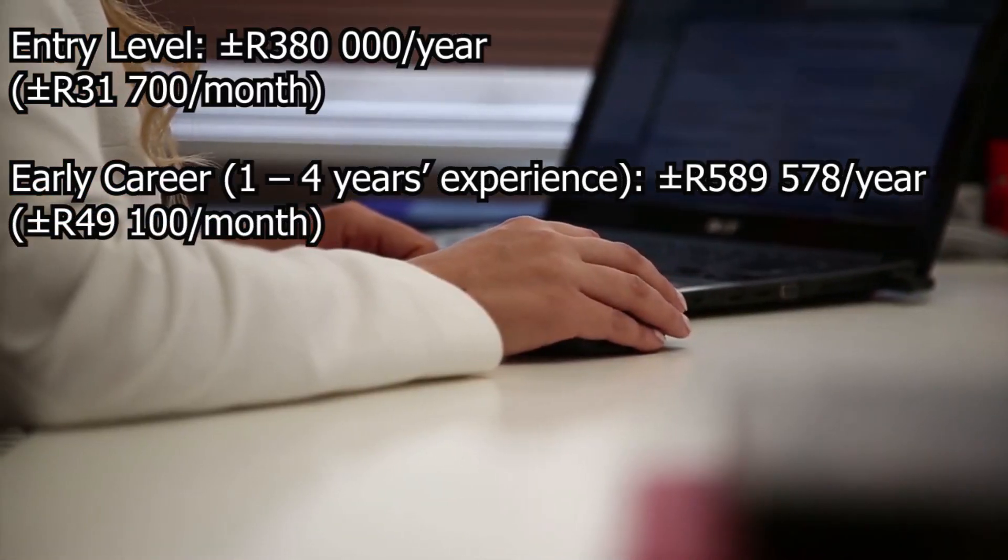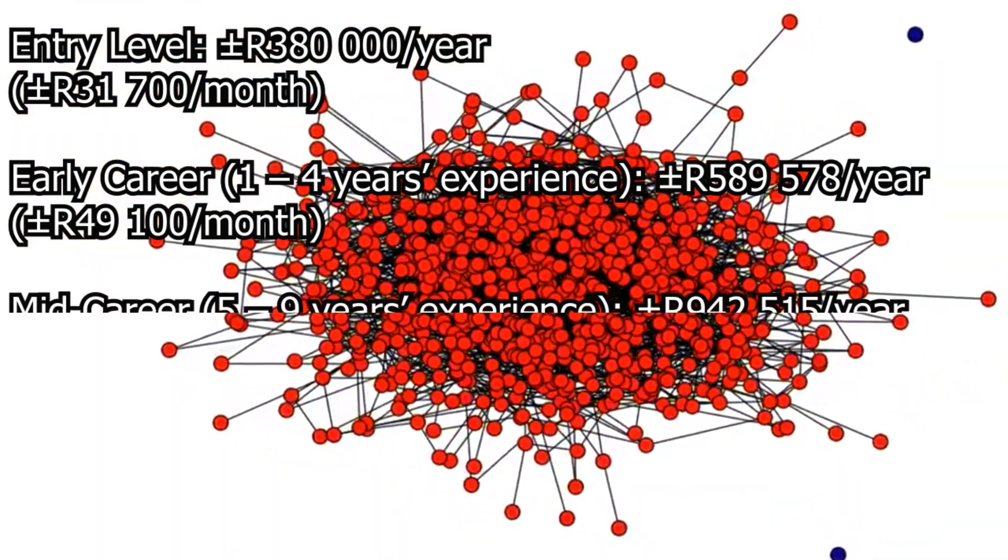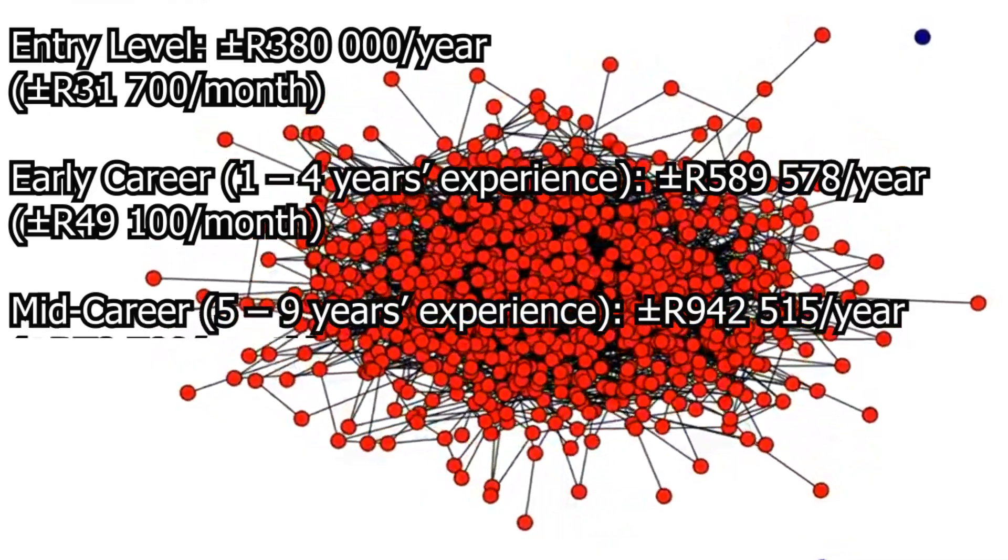Early career, R589,578 per year, which is about R49,100 per month.